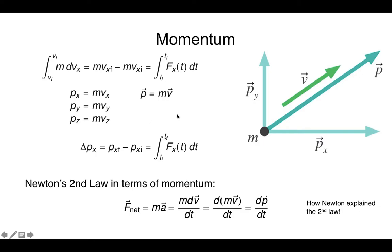We also want to connect the integral version of this, which is the connection to what we called impulse. All of what we'll do in this course assumes that the mass is conserved. If we have mass that changes over time, we have to be more careful, but in most cases we'll keep the mass fixed and try to understand how the velocities changed.